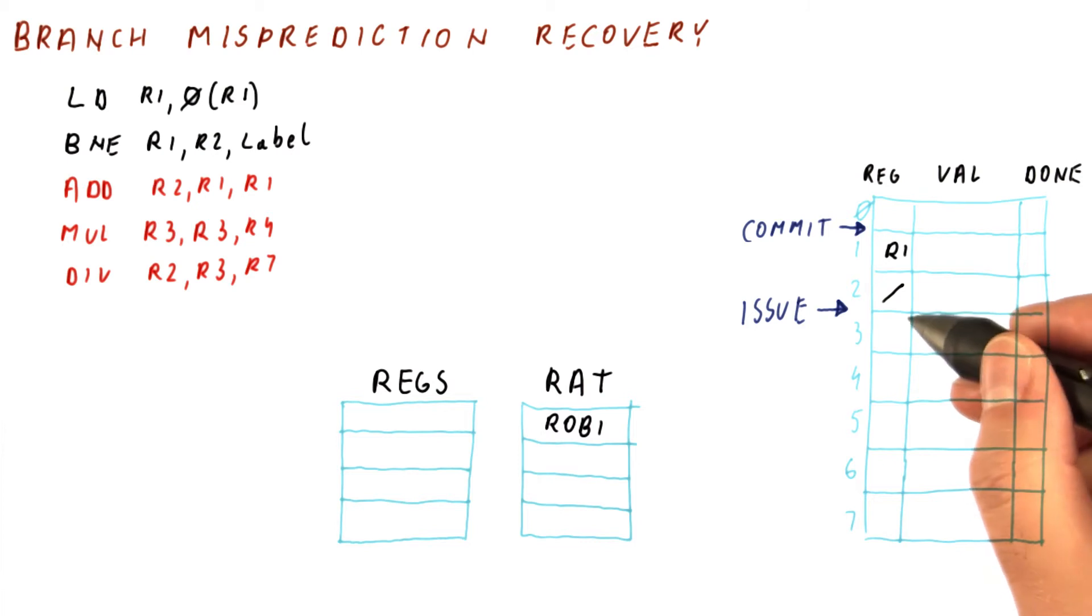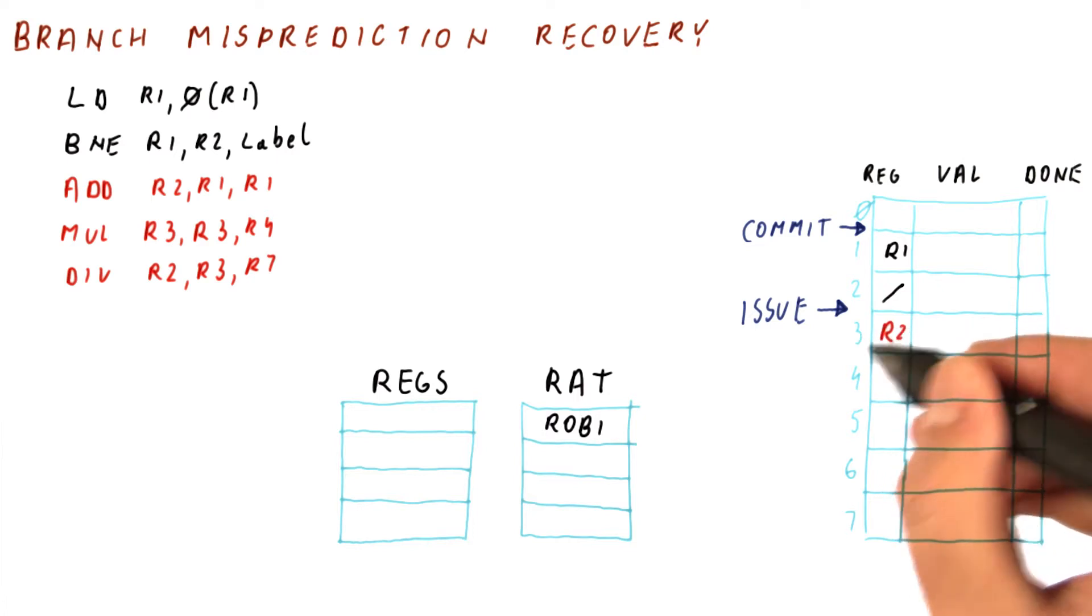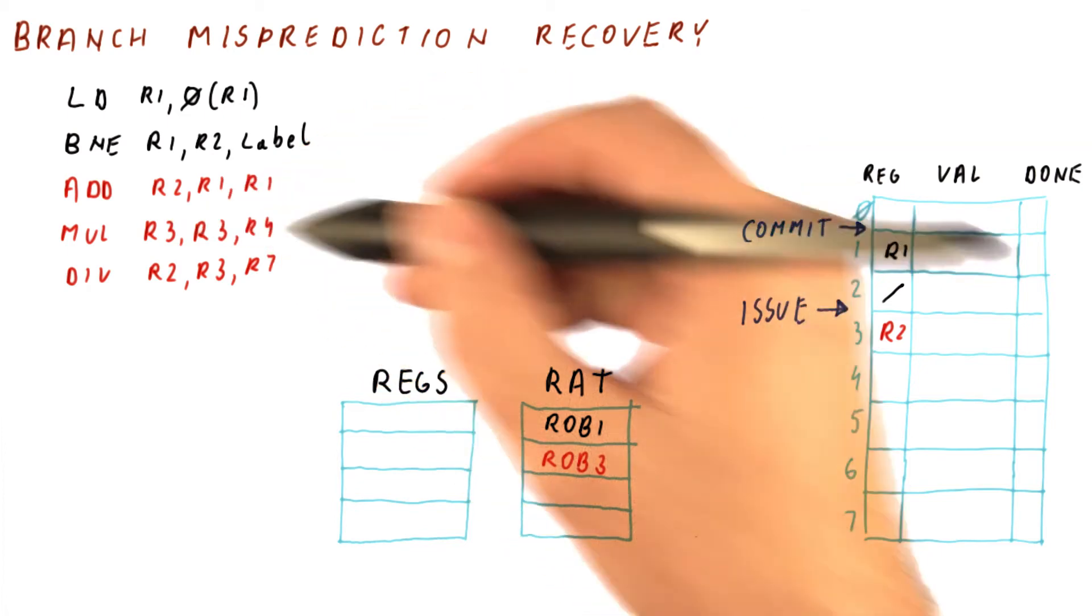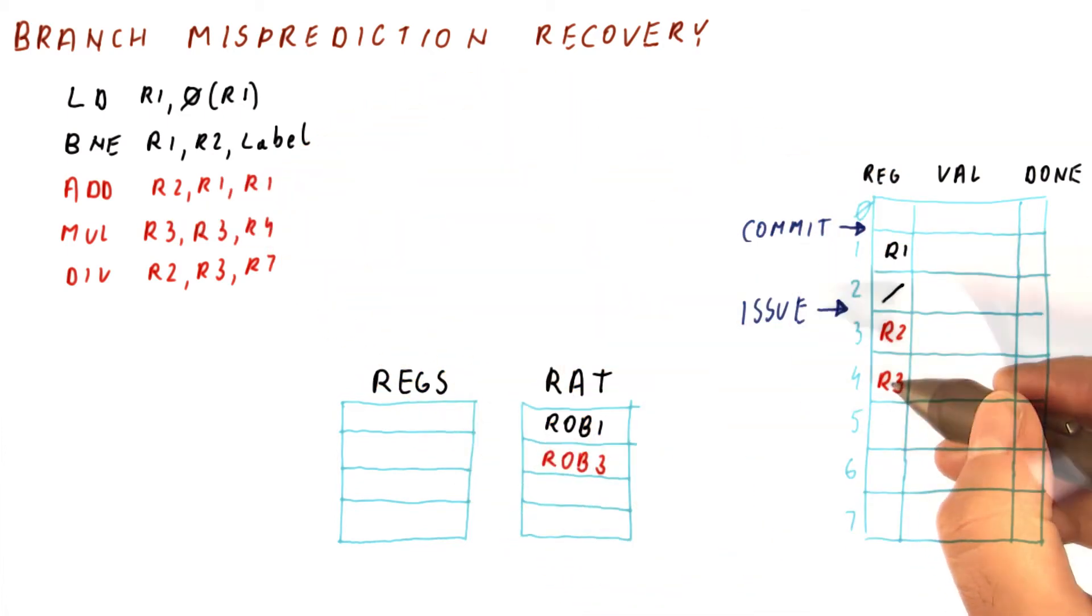So this add here writes to R2, and it gets the next ROB entry here. So the R2 entry is going to point to ROB3. And then this multiply here is going to write to R3. And thus R3 is going to point to ROB4.